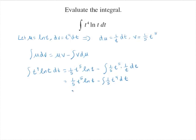And now we can take this integral here, and this equals one-fifth t to the fifth times the natural log of t minus one twenty-fifth t to the fifth plus c. So this is the value of the integral of t to the fourth times the natural log of t dt.